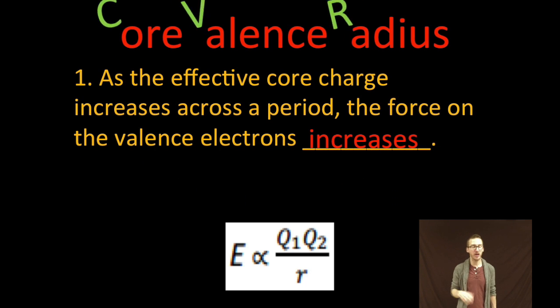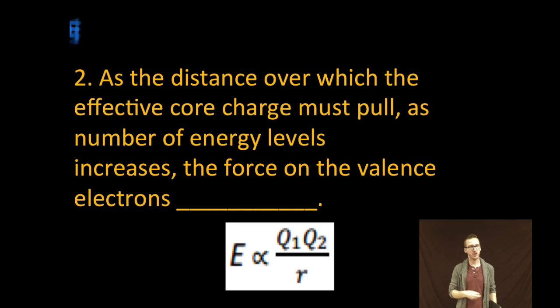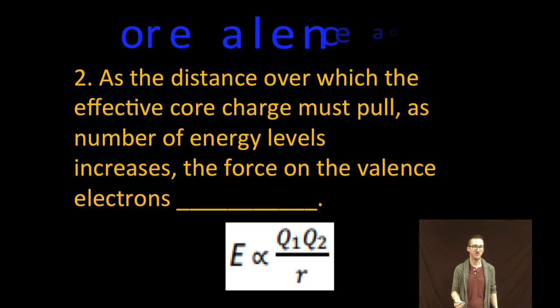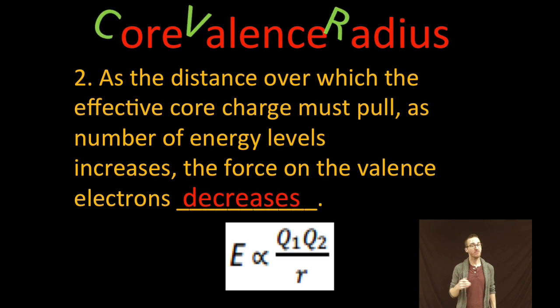So as we think about applying Coulomb's law to CVR formats of atoms, recognize that as those charges get larger, the energy of attraction will also increase. However, as the distance over which the effective core charge must pull increases—as the number of energy levels increases—the force on the valence electrons decreases.